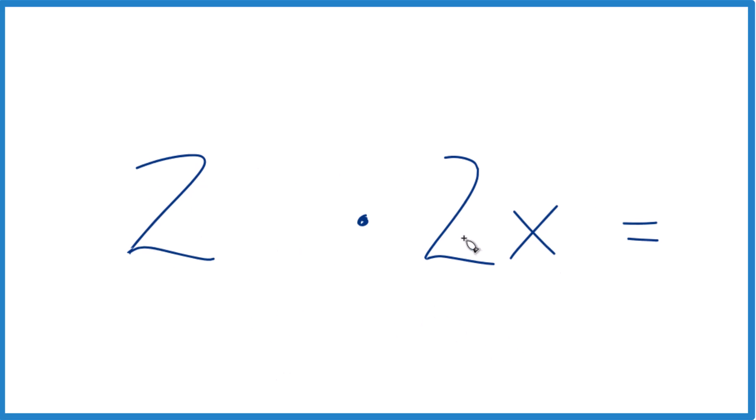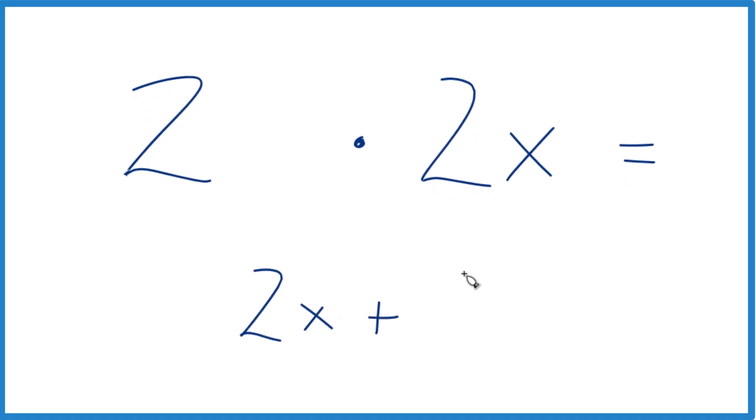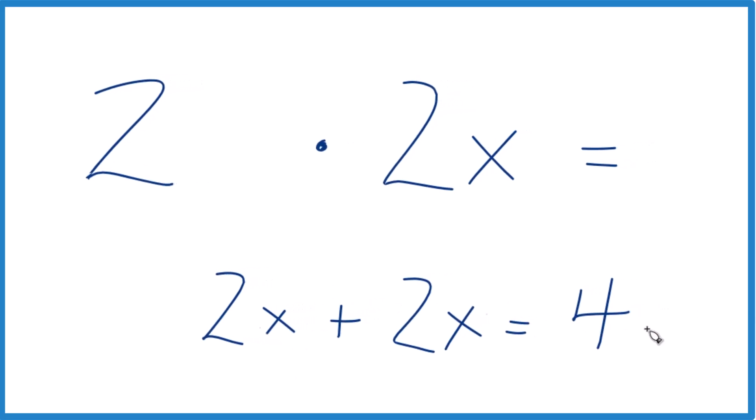You can think of it like this: you have two of these 2x's, so it would be 2x plus 2x. And when we have like terms, we just keep the x the same. 2 plus 2 is 4, and we're adding these like terms together, and we'll end up with 4x.